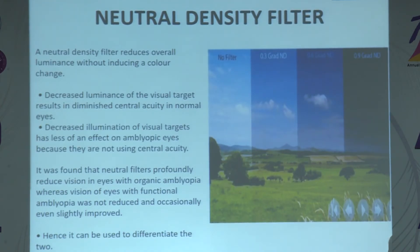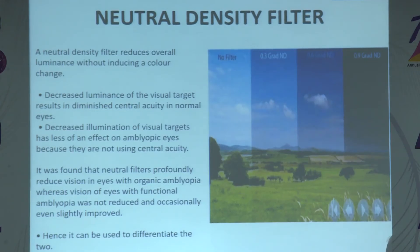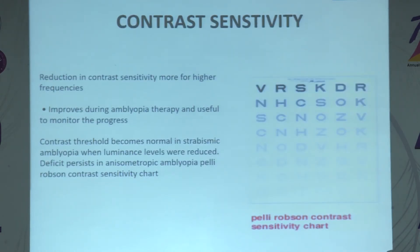The neutral density filter reduces overall luminance without inducing a color change. Decreased luminance of the visual target results in diminished central visual acuity in normal eyes as well as in patients with organic amblyopia. However, in functional amblyopia there is no effect on visual acuity. Hence we can use it to differentiate organic versus functional amblyopia. Contrast sensitivity reduction is more for higher frequencies in amblyopic patients, and it improves during amblyopia therapy, making it useful to monitor treatment progress.